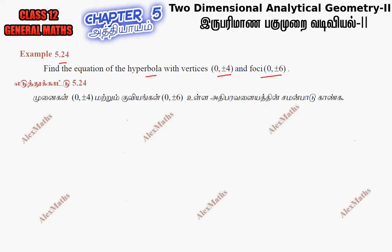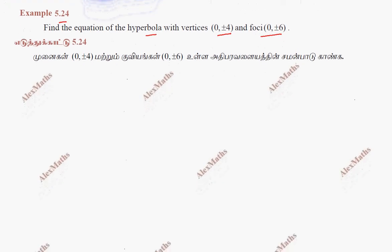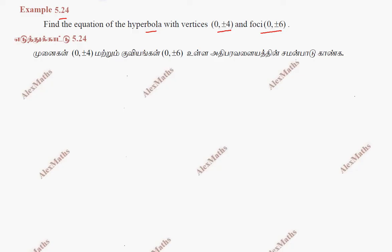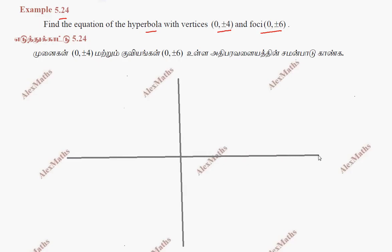We can plot the diagram. We plot the x-axis and y-axis. The vertices are on the y-axis at (0, ±4), so we mark the points (0, 4) and (0, -4).